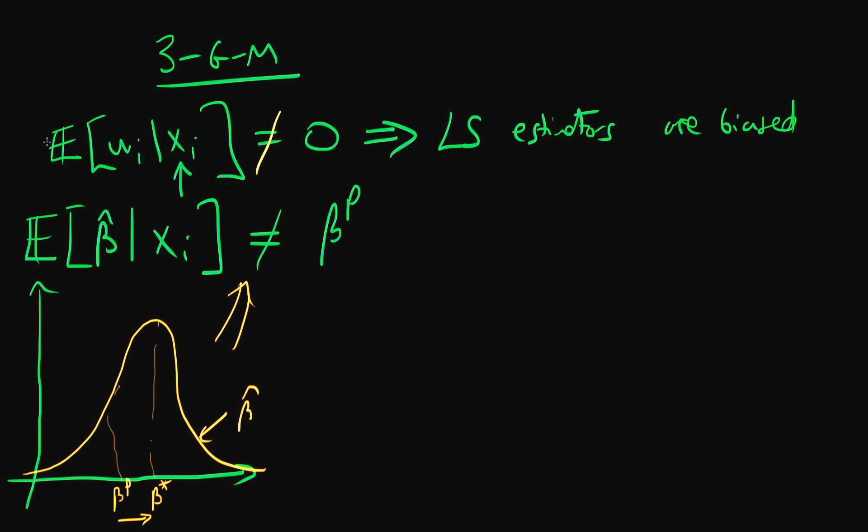So let's think a little bit more about what this actually means, or what it means for the expectation of ui given xi to be equal to zero. So this is if the Gauss-Markov assumption is upheld. Well, another way of writing this is that the covariance of ui and xi has got to be equal to zero.